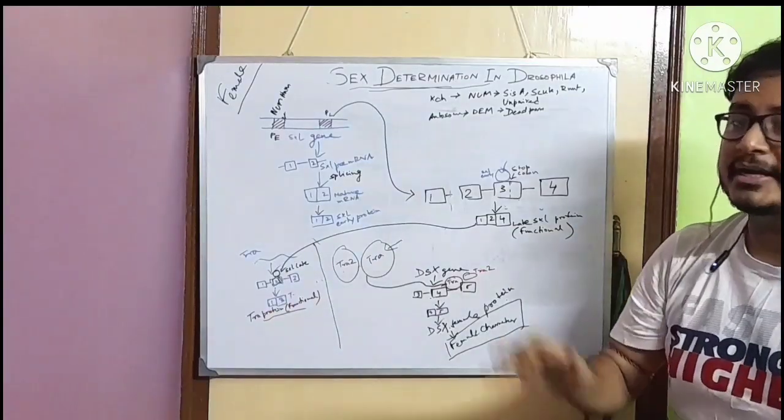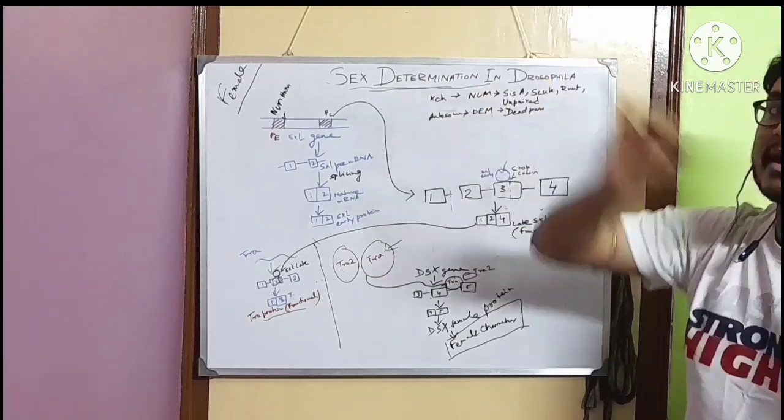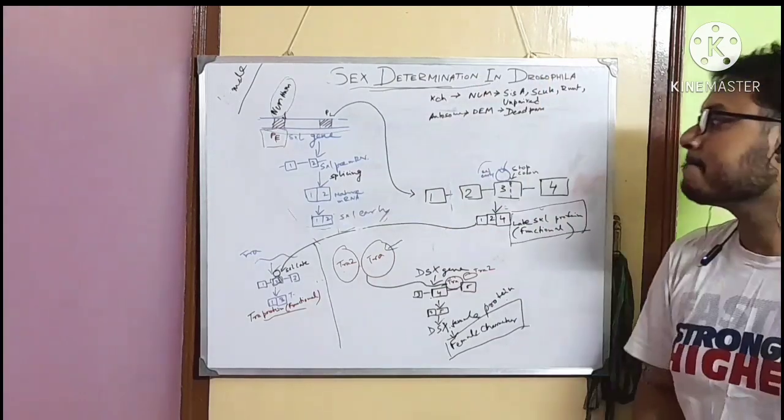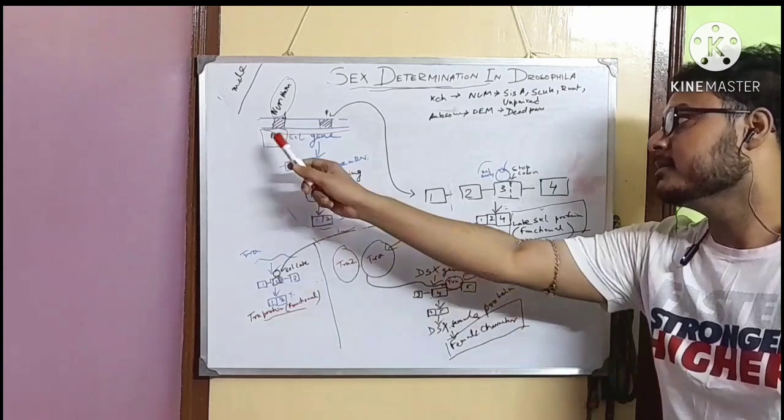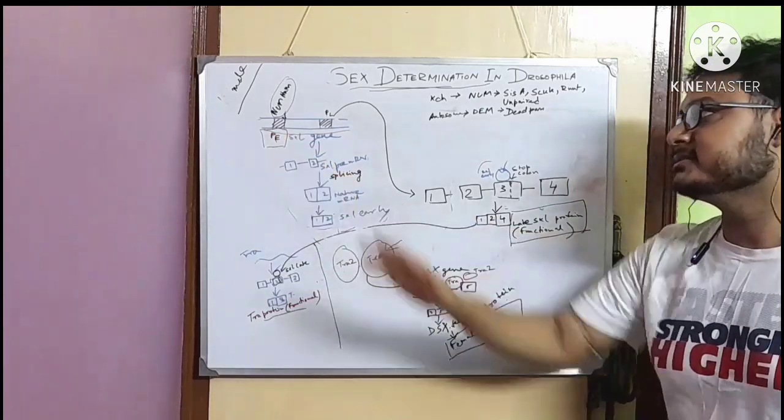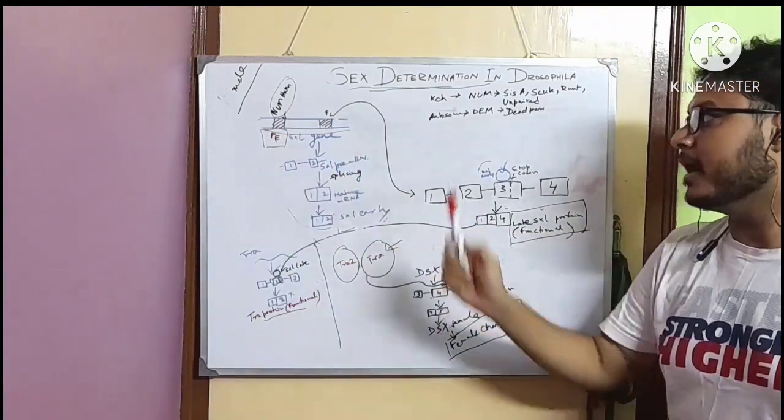This is what happens when female flies are produced. Now, what is happening when the male fly is produced? We have already talked about that. In males, promoter early is inactive. Why is it inactive?